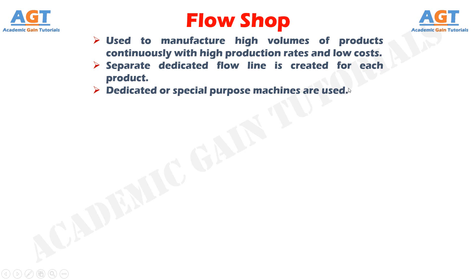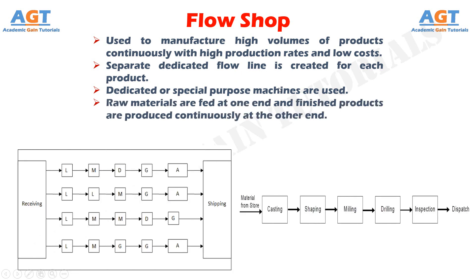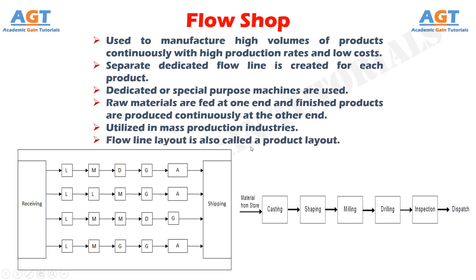A large volume of products must be produced in order to justify the cost of such expensive machines. Flow line manufacturing is most suitable to manufacture high volumes of products continuously. Flow line manufacturing is used in industries where raw materials are fed at one end and finished products are produced continuously at the other end. This layout may have an operational sequence namely forging, turning, drilling, milling, grinding, and inspection before the product is sent to the finished goods store for packing and shipment. Thus, flow shop manufacturing system is utilized in mass production industries. The flow line layout is also called a product layout.